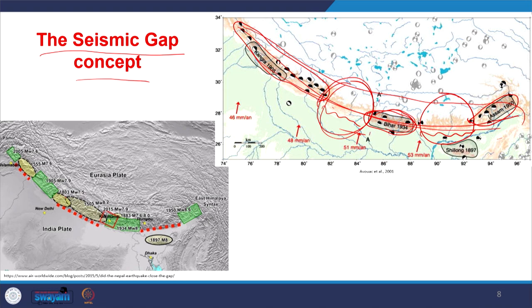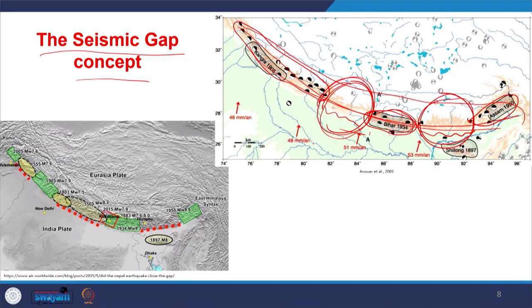In the Himalayan system, several seismic gaps have been identified: the central seismic gap, the eastern, and the western. This tells us that though a plate boundary may extend hundreds or thousands of kilometers, the entire boundary may not be seismically uniformly active throughout. Depending upon the rate of convergence, rock types, fault system, and upliftment, areas can be identified which are relatively less deformed or less active within the ongoing plate boundary system.